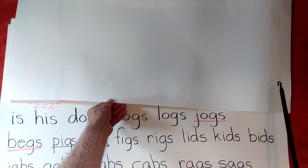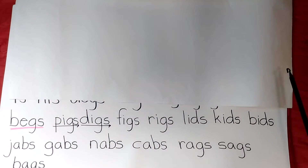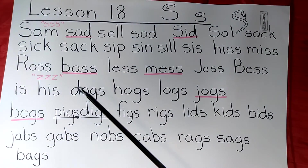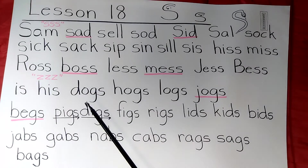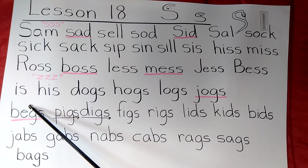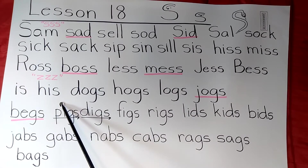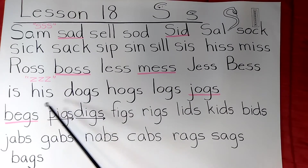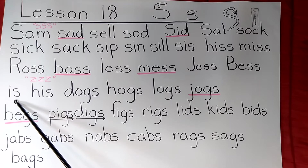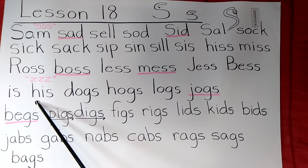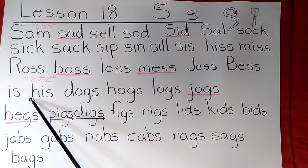Now, S words that sound like Z. All of these are going to have the S at the end. That's kind of a tip-off — sometimes when S is at the end of a word, it's going to sound like a Z. First one: is — is. H-I-S — his.